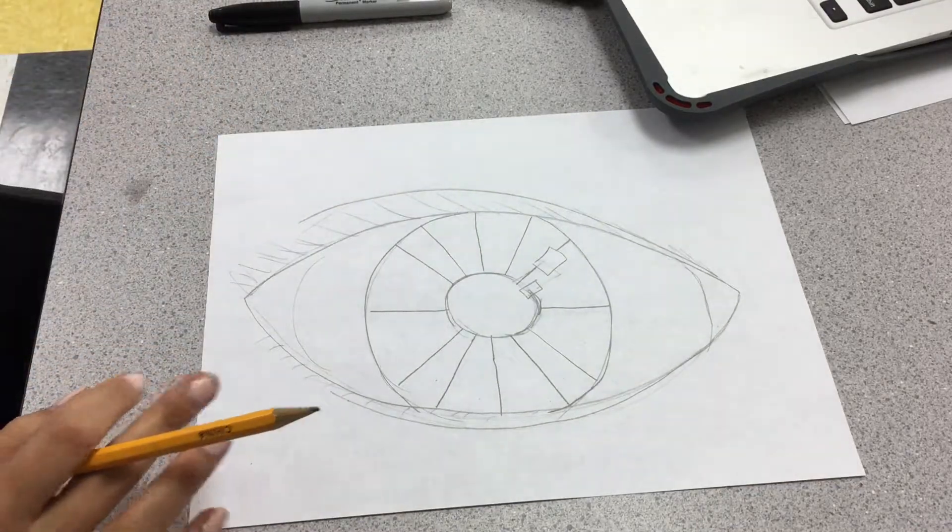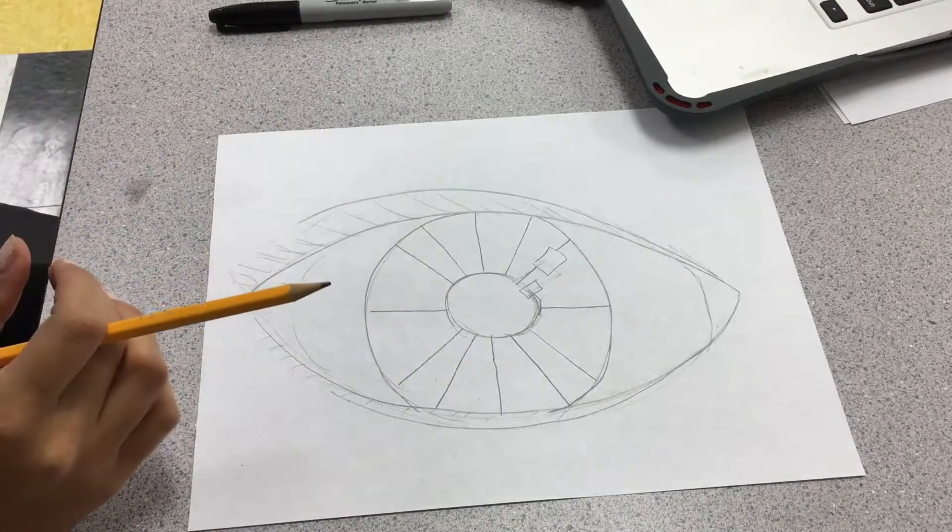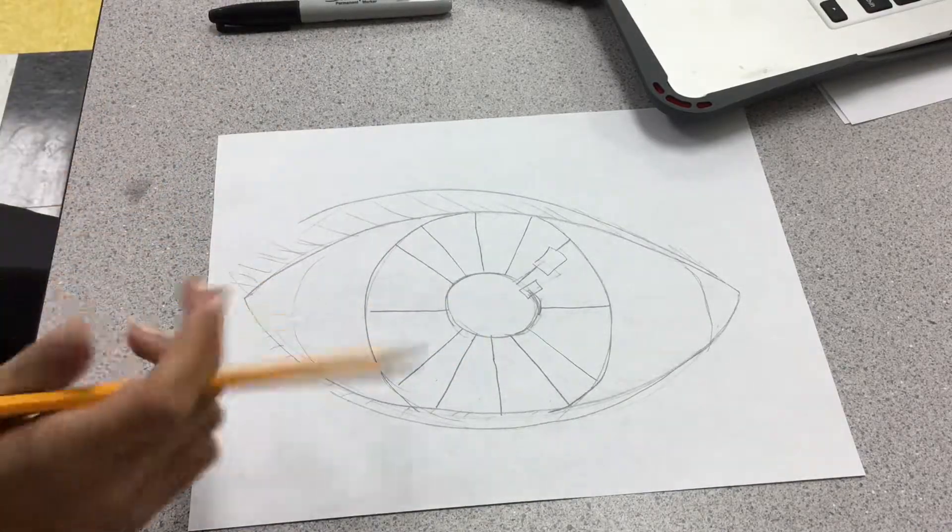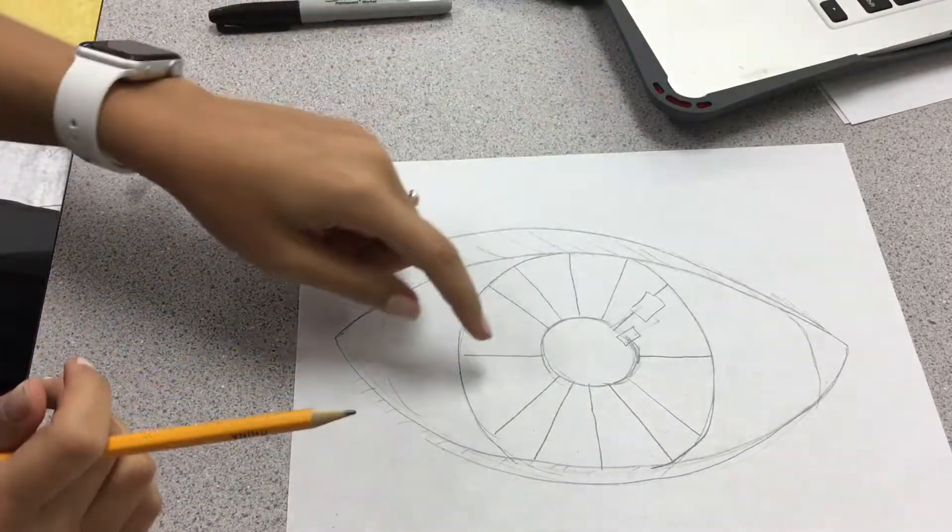So they're not all perfectly around. If you want to try to measure it out and do it perfectly, you can. Or you can just do it like me. You have some bigger pieces, some lower pieces, but that's okay.